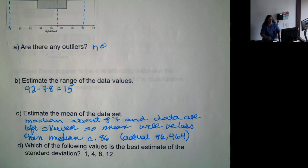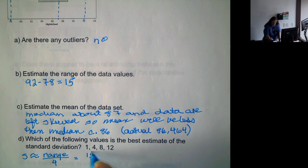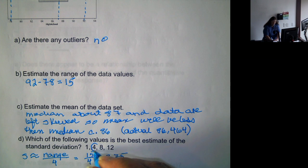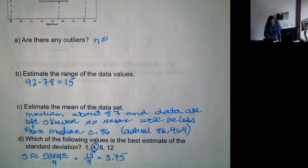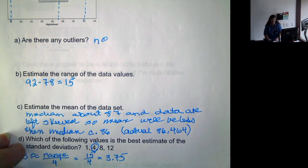Now, we want to figure out what the best estimate would be for the standard deviation. Well, the standard deviation is approximately the range divided by 4. So that would be 15 divided by 4, which is 3.75. So if we look at the numbers 1, 4, 8, and 12, 4 is the closest to 3.75. So that is approximately the standard deviation.